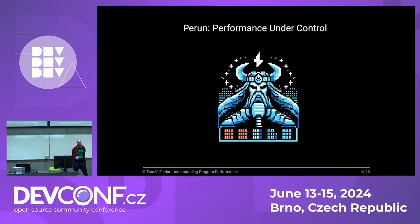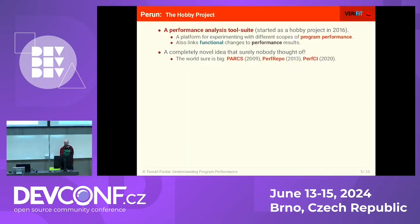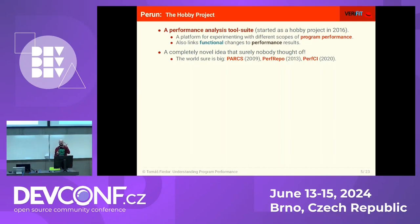In the next section, I will be talking about my journey from a hobby project called Perun — Performance Under Control — and how we actually try to apply it on Kernel. Perun is basically a performance tool suite that I started as a hobby project in 2016. It was a platform for experimenting with different scopes of program performance: measuring data, how fast your program is, how much resources it consumes, analyzing it, detecting performance regressions, generating time-consuming workloads, or pretty printing the results. One particular aspect was that I decided to link the performance results to the functional changes.